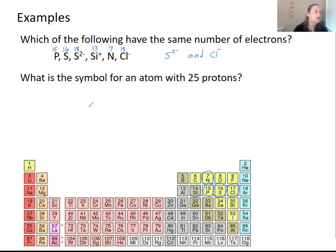For the next problem, we want to know what the symbol is for an atom that has 25 protons. So we're going to use the periodic table and find the atom that has 25 protons. That's here. This is manganese. And so its symbol is just going to be Mn.